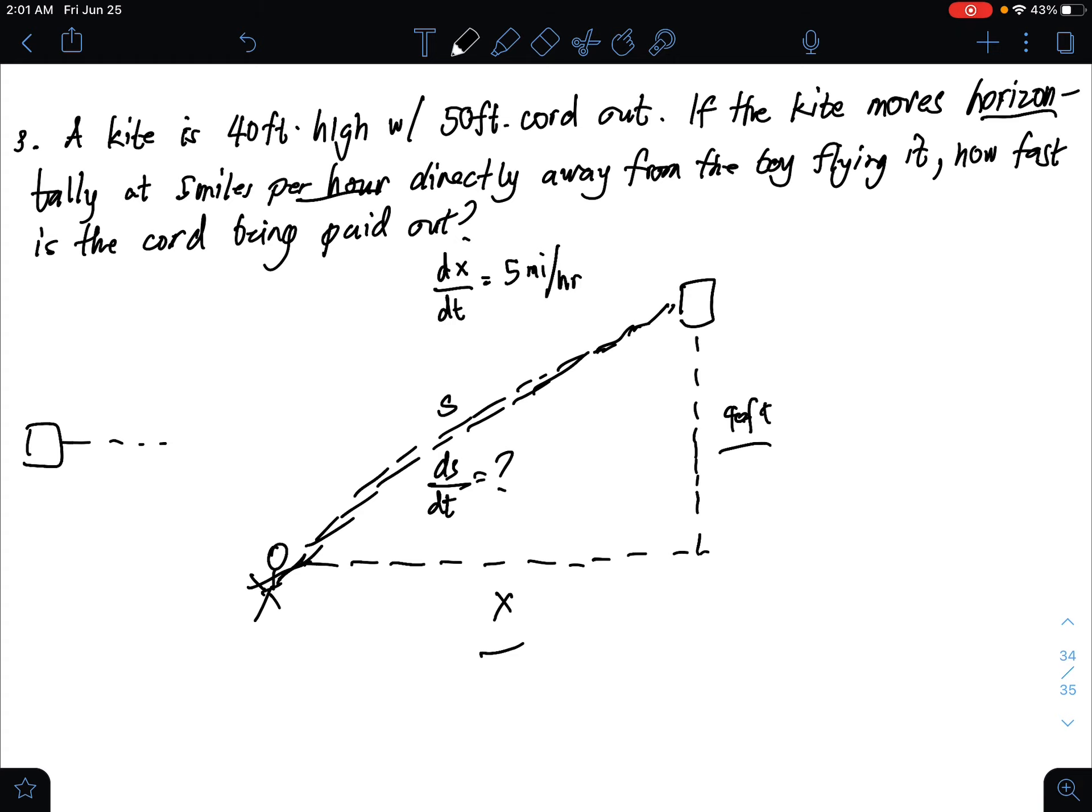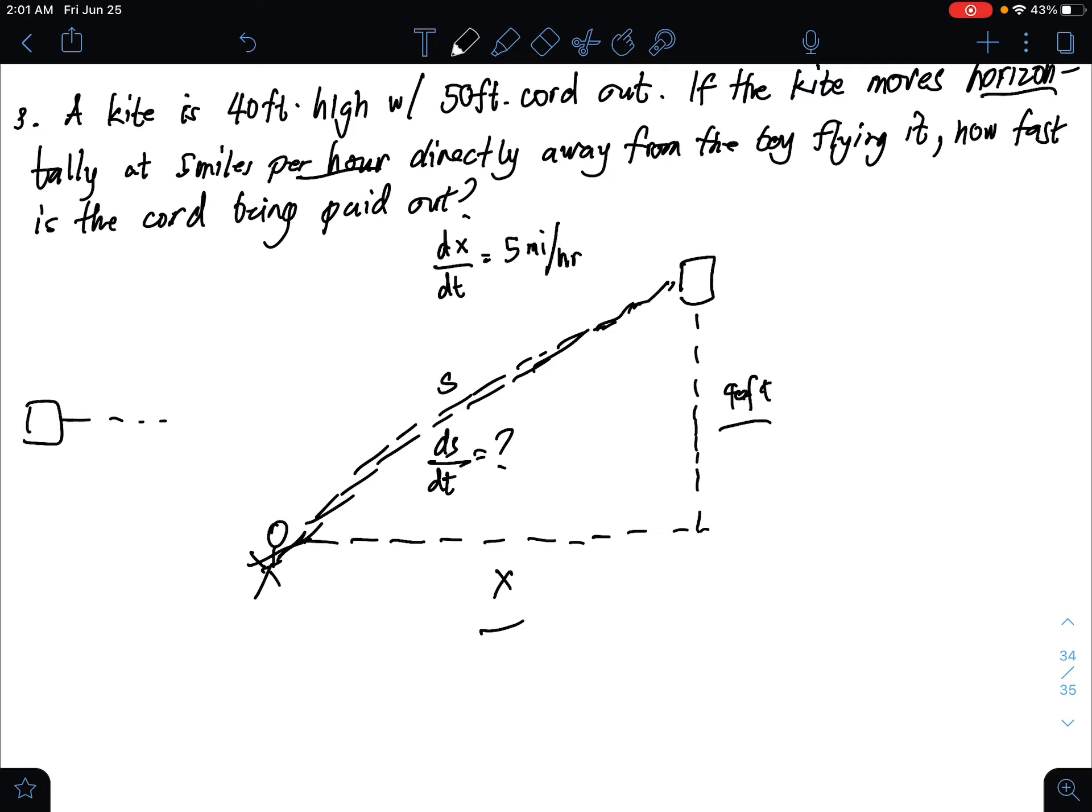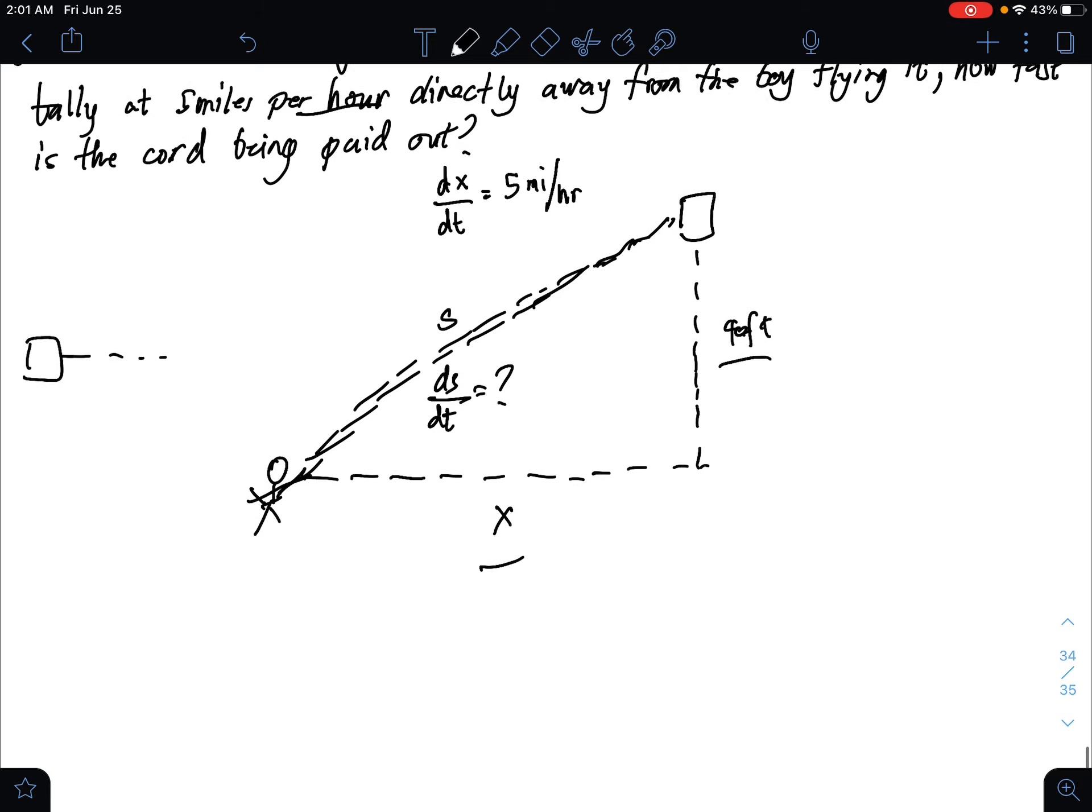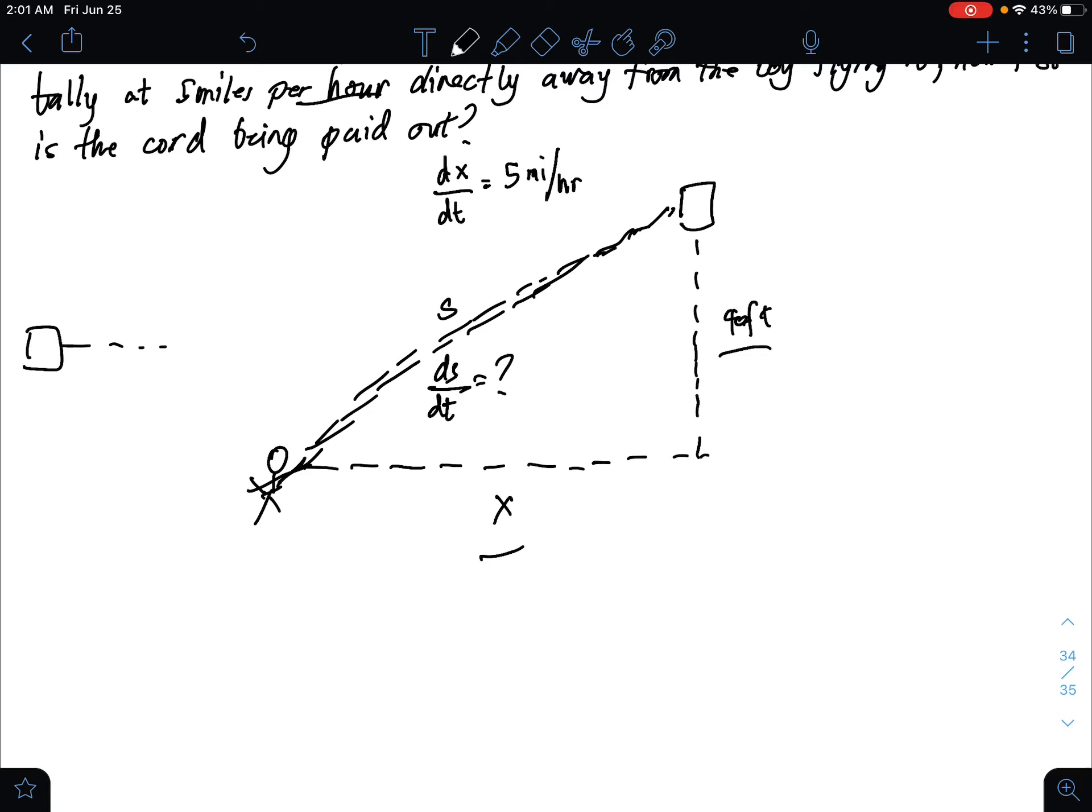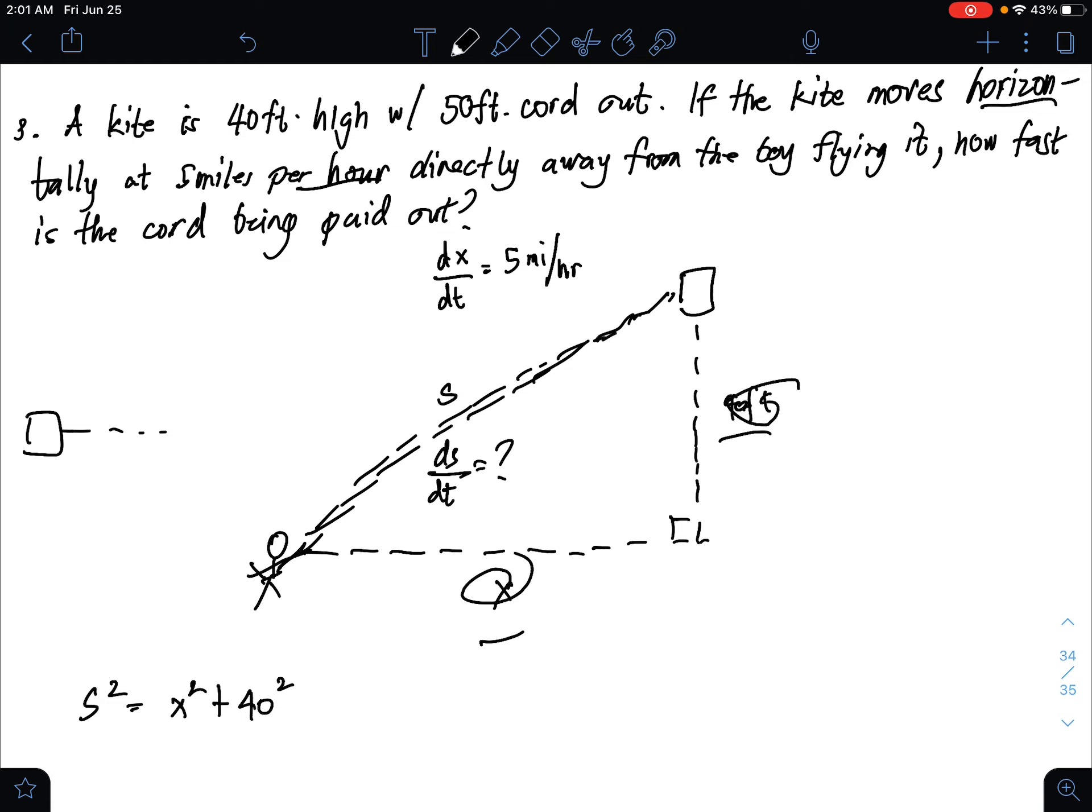Notice that this is a right triangle. And remember that upon solving time rates, we have to formulate equations. Once again, that is a right triangle. Do you remember the Pythagorean theorem? S squared by formulating the formula, S squared equals X squared plus 40 squared. We have X at 50 feet cordoned out. So this is the cord at 50 feet now.